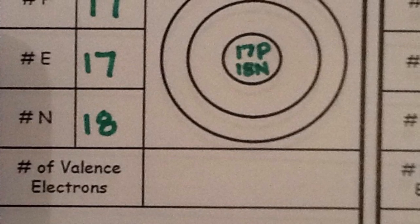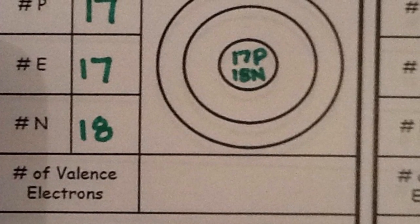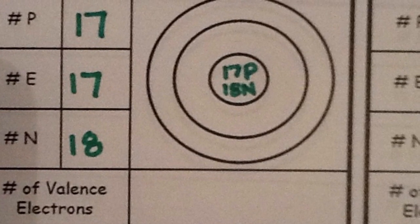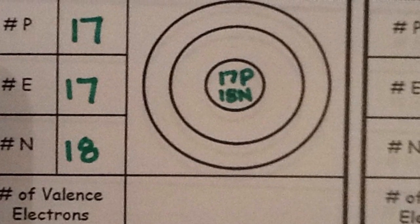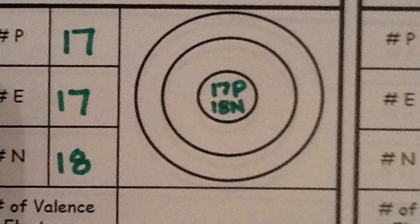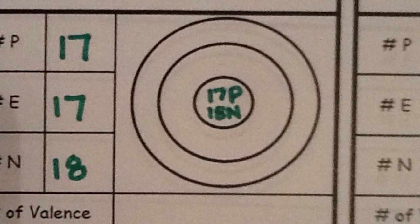So go ahead and put the protons and neutrons in the nucleus. I stopped drawing the circles at this point because you really don't have enough space and it's much easier just to label the number with the capital letter abbreviation for that subatomic particle. So P for protons, N for neutrons.